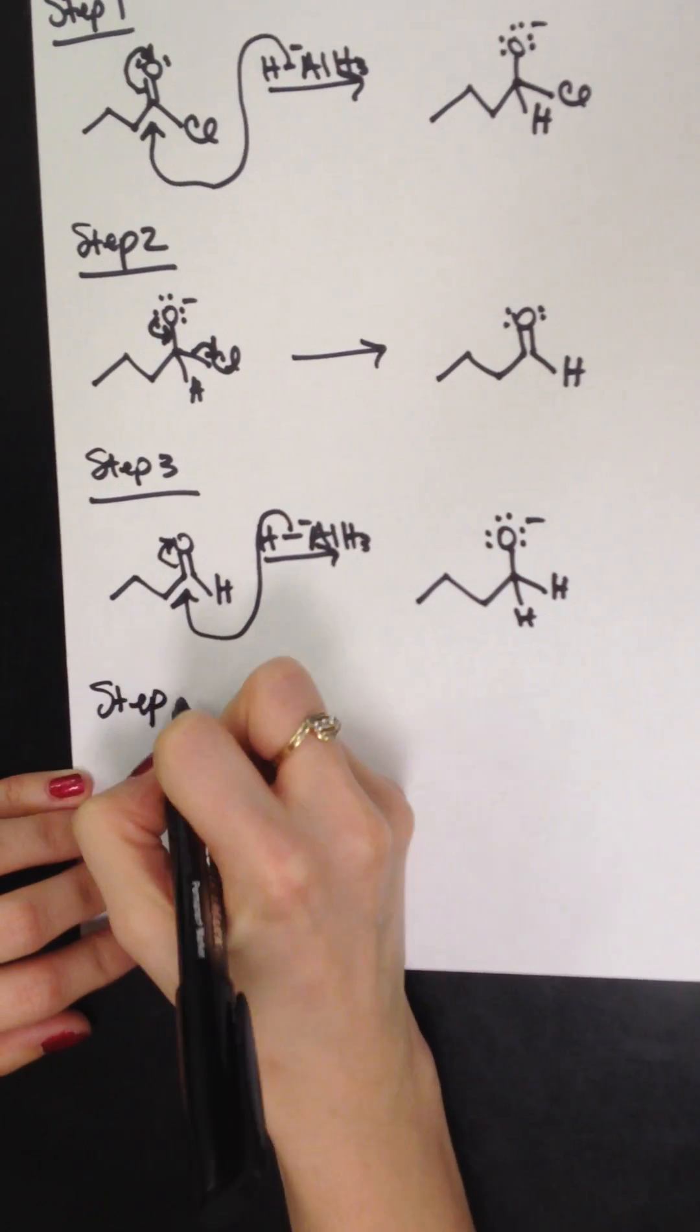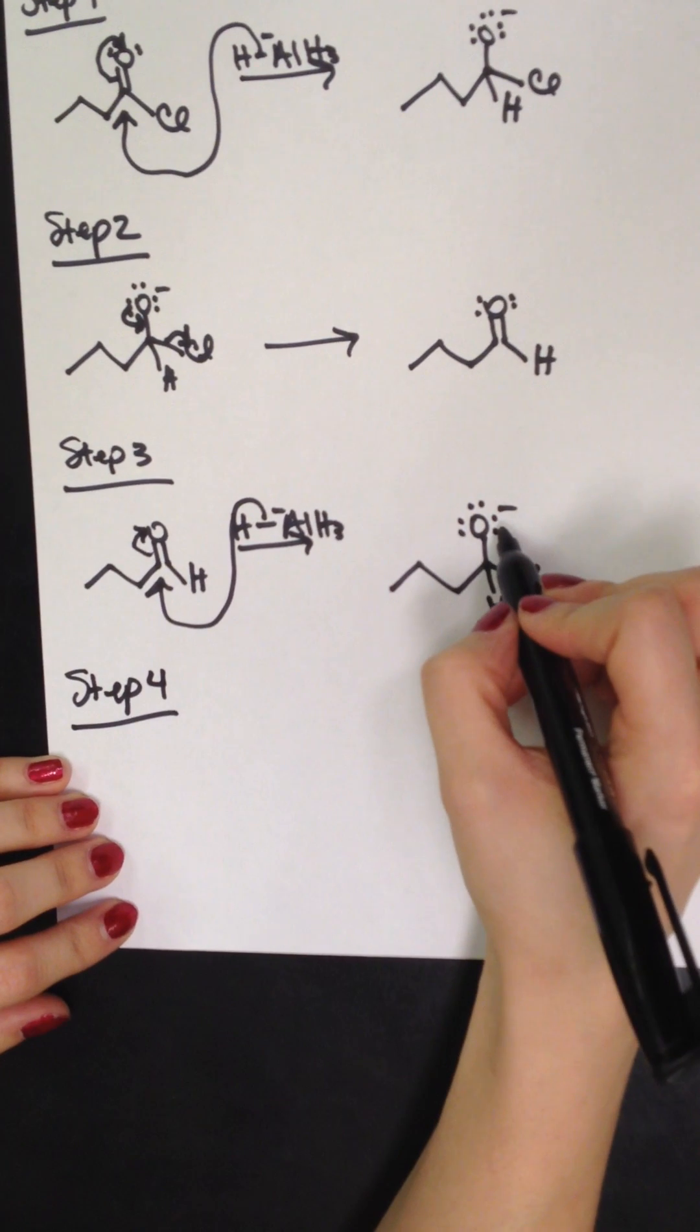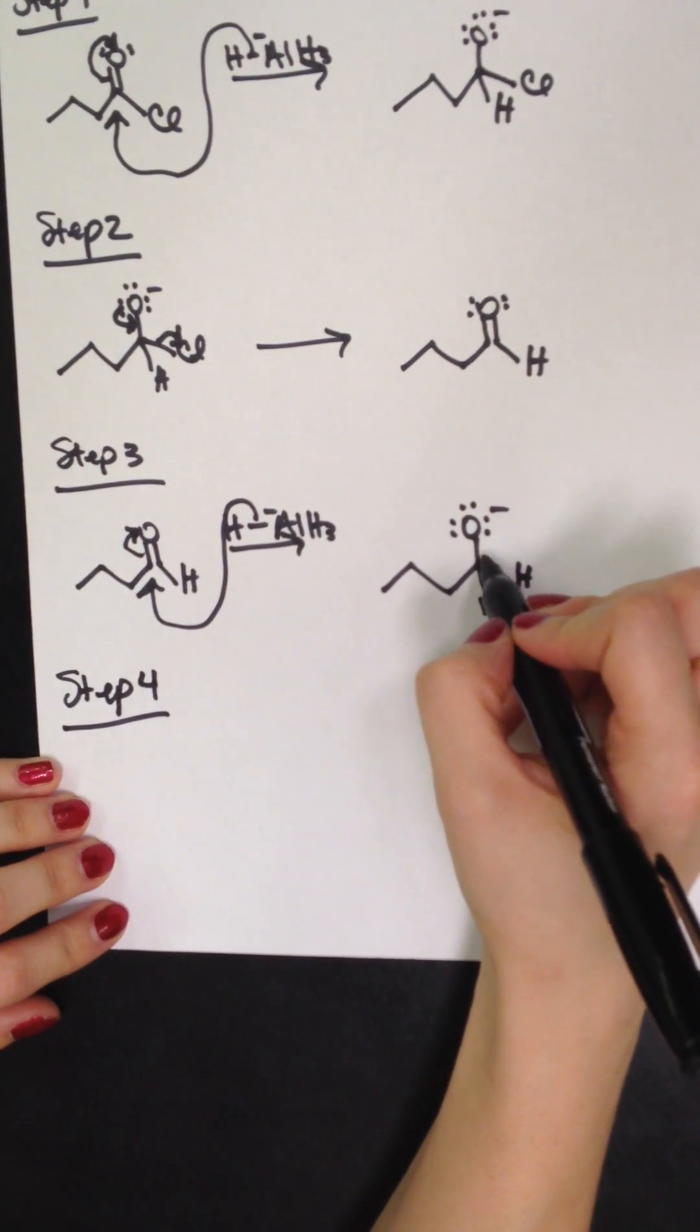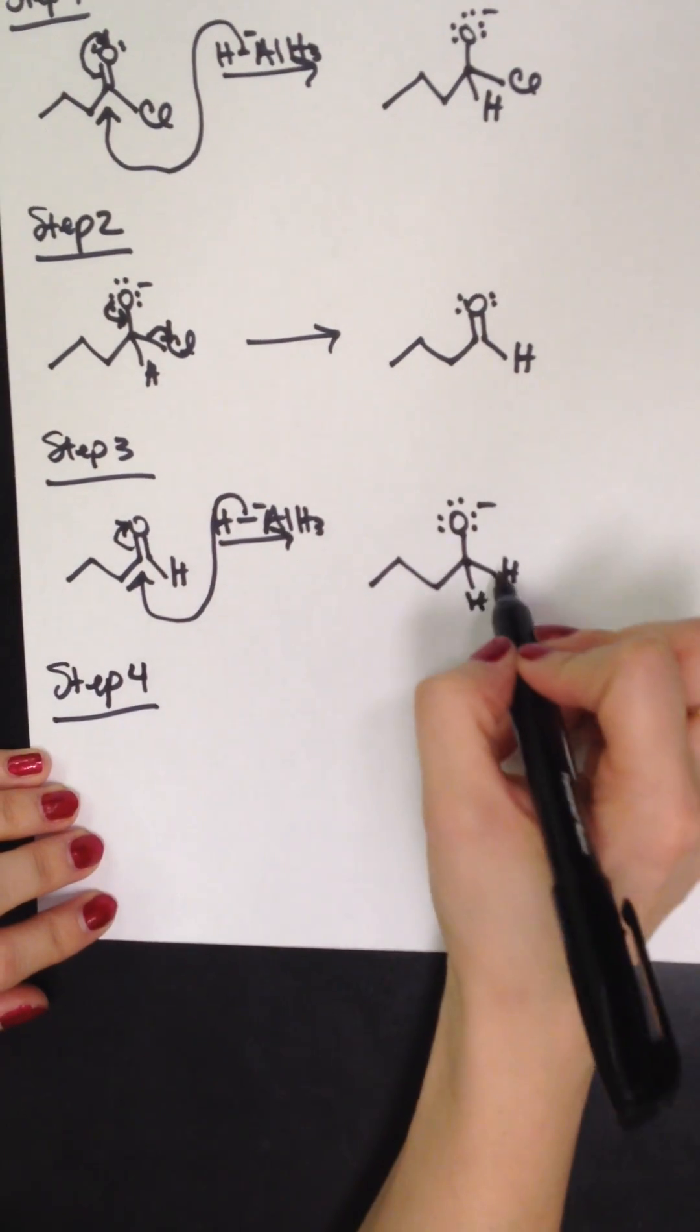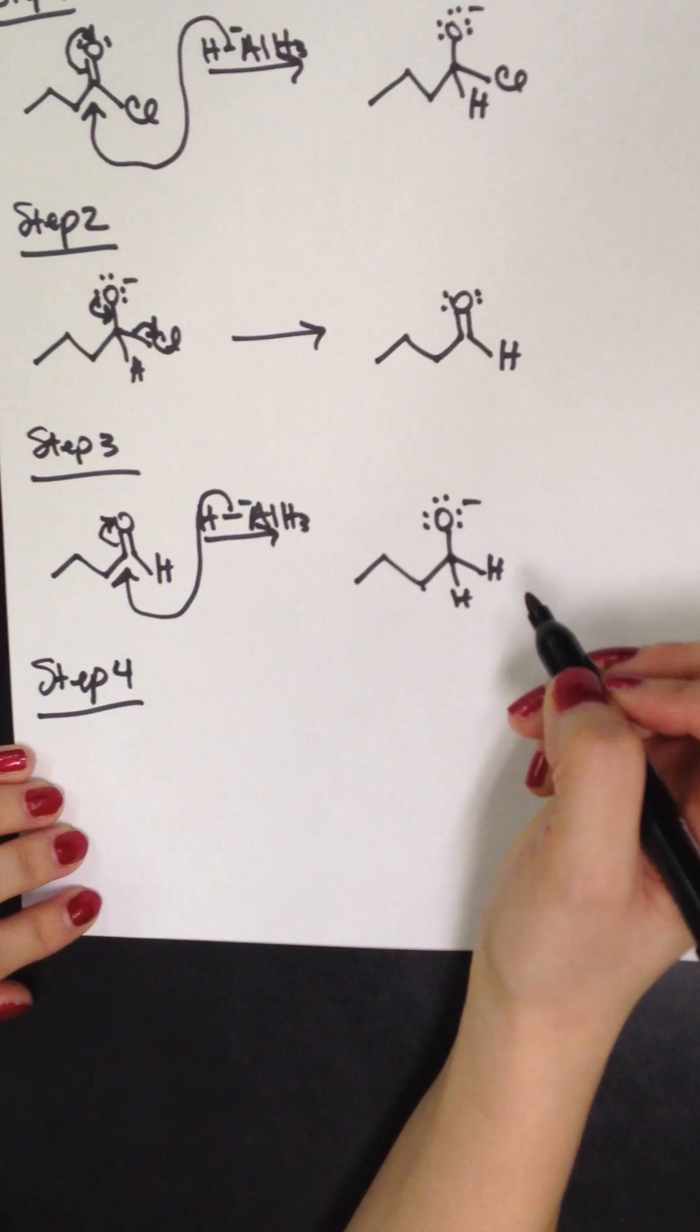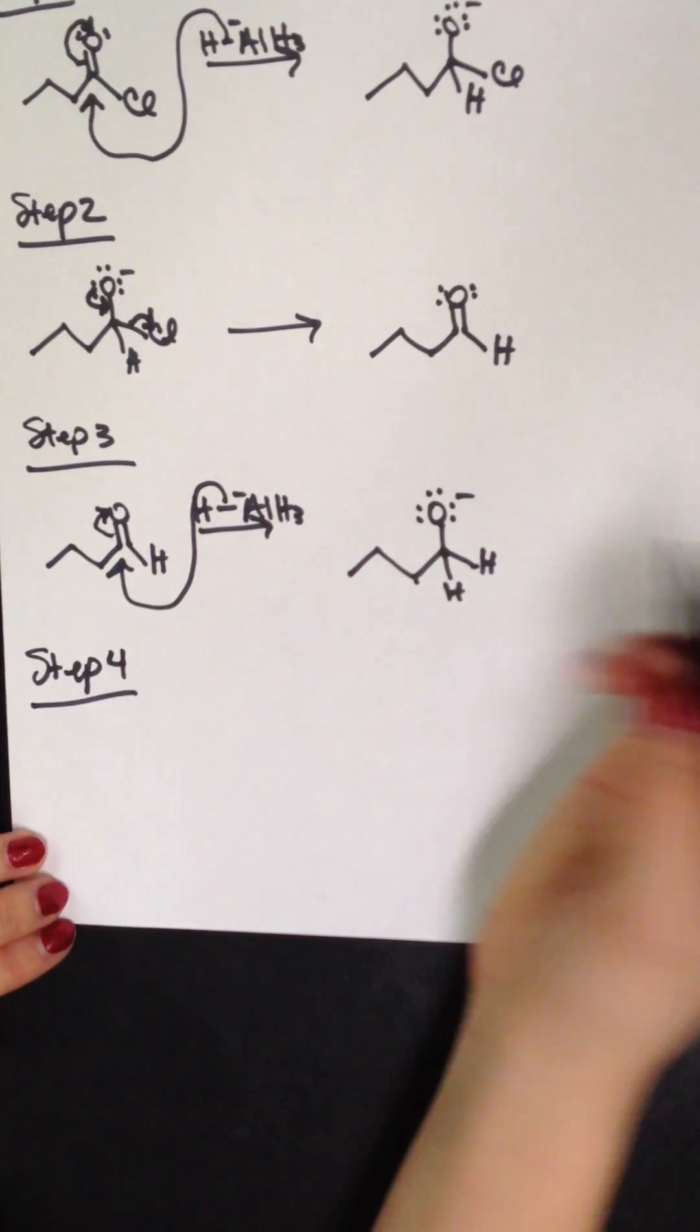Then we have step four. Now, normally students would want to reform the pi bond and kick off a leaving group. However, because there's only carbon to hydrogen or carbon to carbon bonds, we can't do that. There's not enough leaving groups.